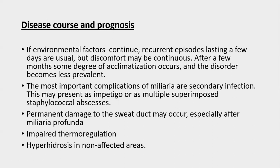Disease course and prognosis: if environmental factors continue, recurrent episodes lasting a few days are usual, but the discomfort is continuous. After a few months some degree of acclimatization develops and the disorder becomes less prevalent. The most important complication of miliaria is secondary infection, presenting as impetigo or multiple superimposed staphylococcal abscesses, referred to as miliaria pustulosa or periporitis staphylogenes. Permanent damage to sweat ducts may occur. Other side effects include impaired thermoregulation, heat strokes, and hyperhidrosis in non-affected areas.